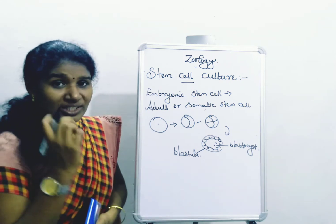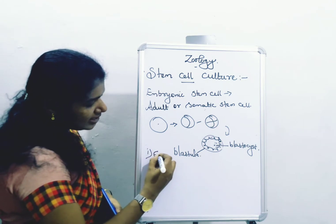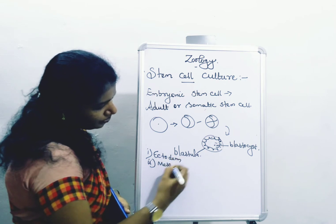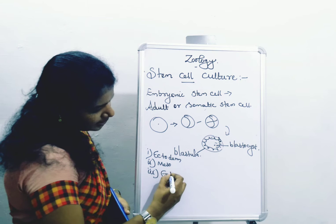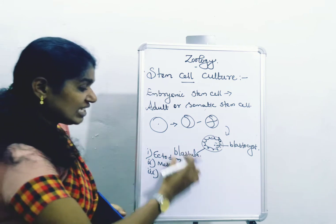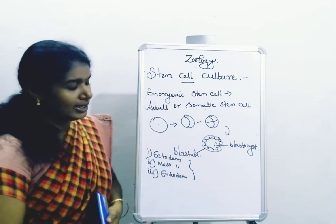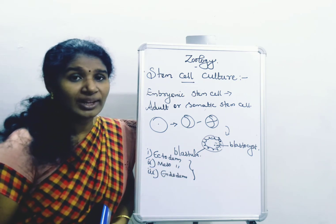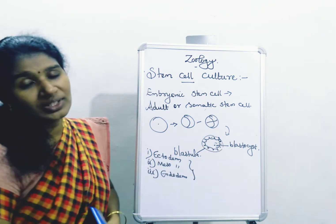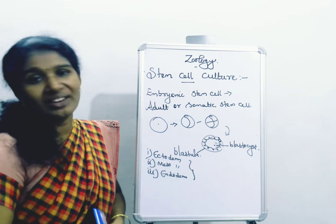In the blastocyst condition, we can differentiate three layers: one is called ectoderm, another one mesoderm, and another one endoderm. These three layers are formed and they are responsible for developing organs. So the three layers are present in the blastocyst stage, and in this stage only these three layers are going to develop into organs.